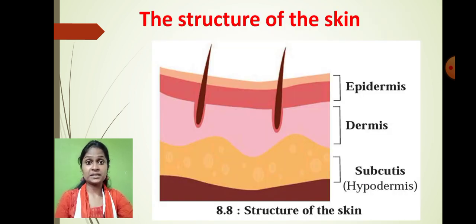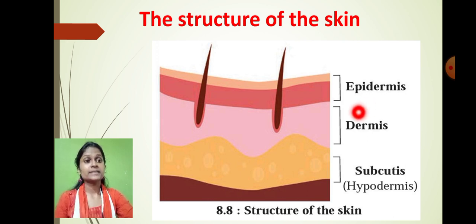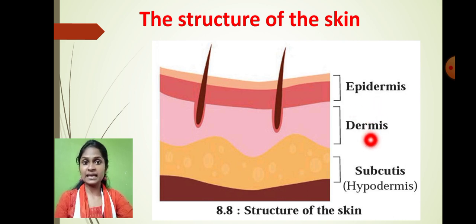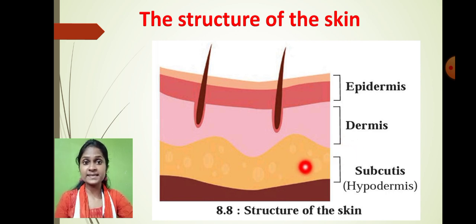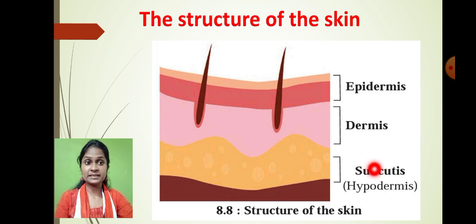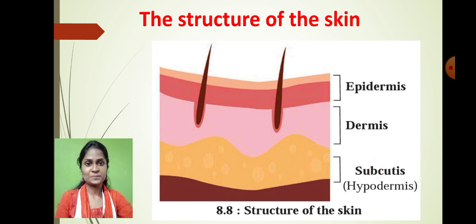We also learnt that the skin is basically made up of two layers. The outer layer we call it as epidermis and the inner layer we call it as dermis. In the subcutaneous layer, the fat molecules are deposited, and this subcutaneous layer is responsible for maintaining our body temperature.